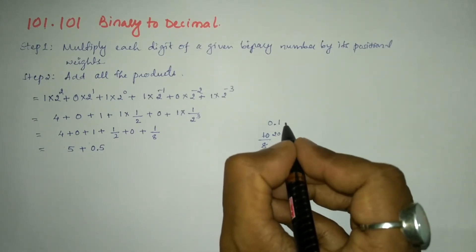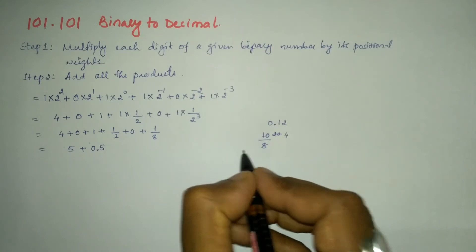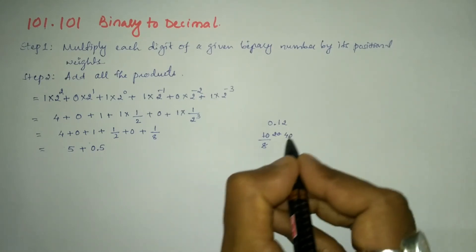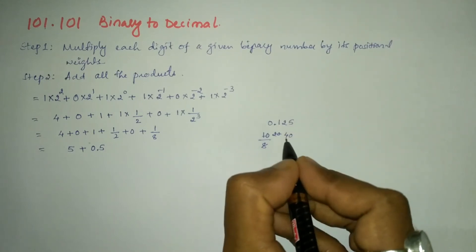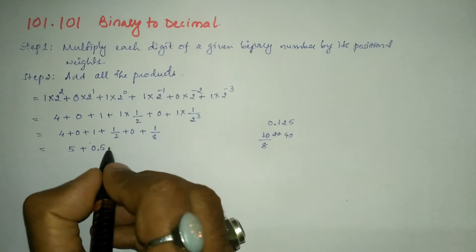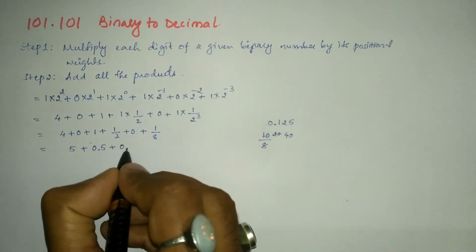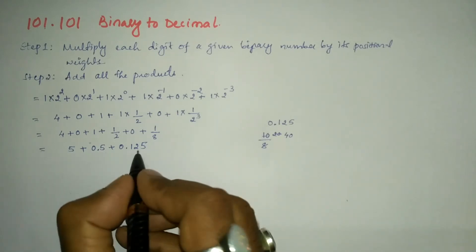Here this 1 will become 10. 8×1 is 8, so 2 is the remainder. Make it 20. 8×2 is 16. So 20 minus 16 gives remainder 4. It will become 40. 8×5 is 40. So here we got 0.125.